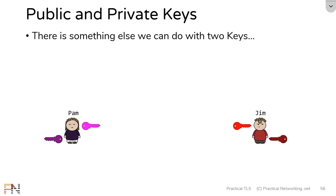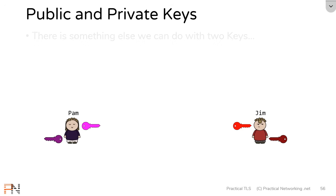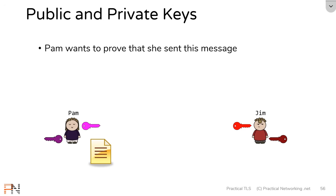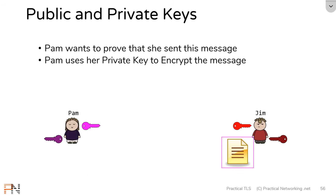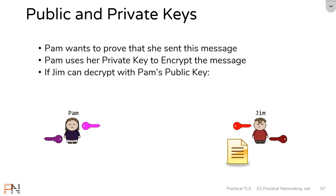There's something else you can do with asymmetric keys. Let's say Pam has a message for Jim, and for this message she doesn't care about confidentiality — she doesn't care who can read it — but she definitely wants to prove that it was her who sent it. What she can do is use her own private key to encrypt that message. The only key that can decrypt it is her public key, which Jim and anyone else has. Jim can then decrypt that message using Pam's public key.